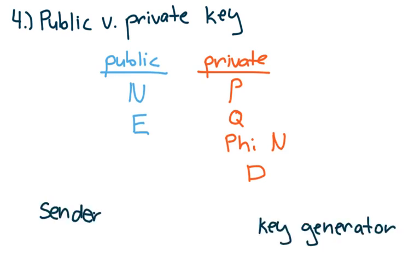The sender, like everybody else, has access to the public key. This means that he or she has access to the values of N and E. They'll use these two values to encrypt their message.